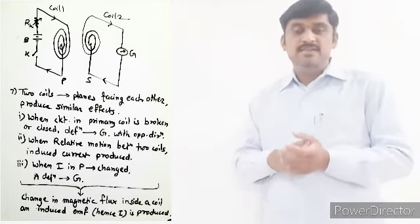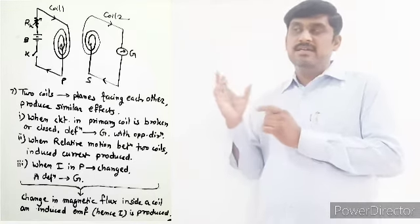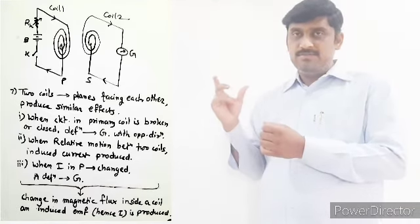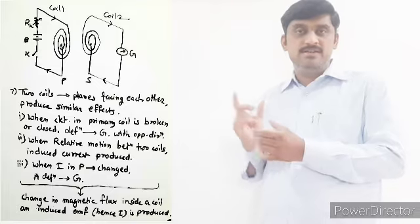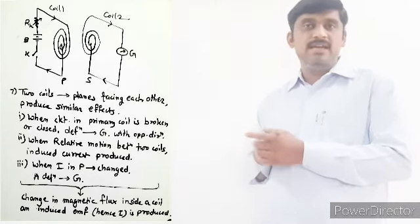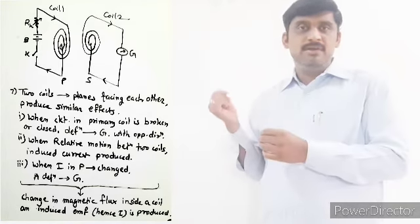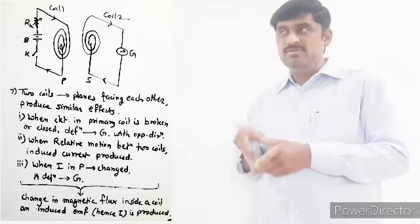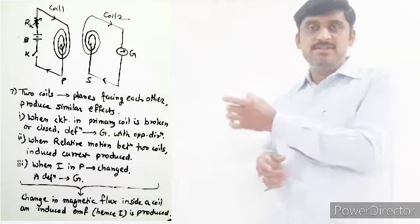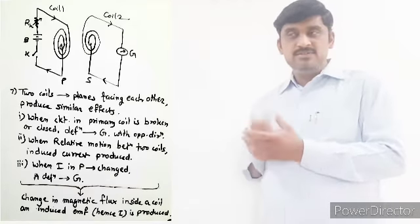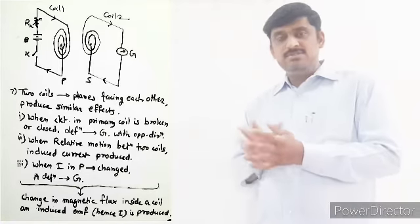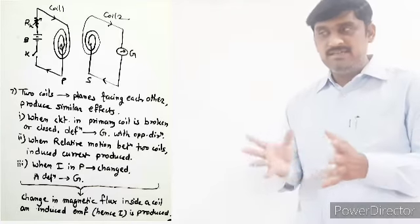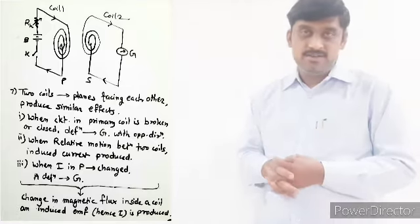The second observation is about relative motion. When the primary coil is moved towards or away from the secondary coil, the magnetic field experienced by the secondary coil changes. When there is a change in the magnetic field, current is induced in the secondary coil.